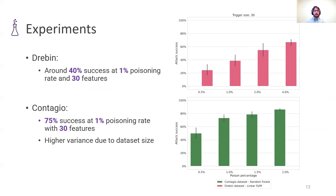A similar pattern is also highlighted by our experiments on the Drebin and Contagio datasets, where the constrained attacker controlling only 30 features and 1% of the dataset can achieve a success rate of around 40% and 75% respectively.